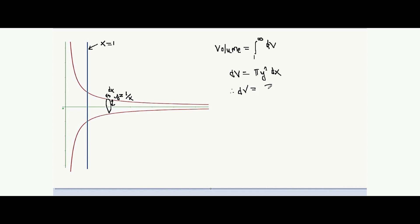So our elemental volume dv becomes equal to pi multiplied by y square which is 1 by x the whole square multiplied by dx. Now we need to integrate this elemental volume from 1 to infinity. So that's what we're going to do here. The volume is equal to integration from 1 to infinity of dv which is pi multiplied by 1 by x square dx. Now this gives us minus 1 by x into pi and we integrate it from 1 to infinity. So what we get here is the value of the volume as pi which is a finite value.